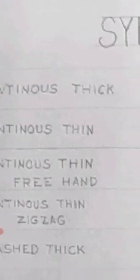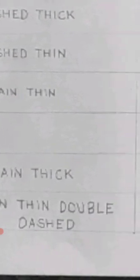So we have types of lines. Continuous thick is border, continuous thin is construction line, continuous thin freehand, continuous zigzag is brake line for long brake and short brake. Dashed thick line for section, chain thin for center line, and chain thin double dash for cross section.